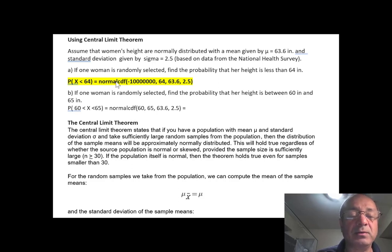We can use a normal CDF feature built on your TI-84. You need a lower bound, an upper bound, the mean, and the standard deviation. For less than, your lower bound should always be negative infinity. But we use like negative a million or a billion. Just put a negative one with as many zeros as you want. The upper bound should be 64 because we cannot exceed 64. And the mean is 63.6 and 2.5.